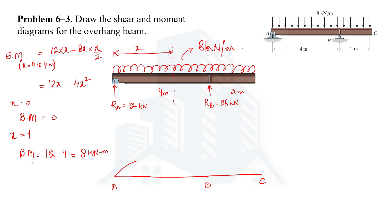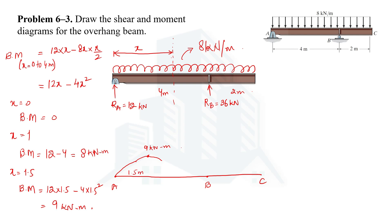Since the shear force was zero at x = 1.5 m, the bending moment is maximum at that point. Substituting x = 1.5 into M = 12x − 4x²: M = 12(1.5) − 4(1.5²) = 18 − 9 = 9 kN·m. So the maximum bending moment is 9 kN·m at 1.5 m from A. At x = 4 m (point B): M = 12(4) − 4(16) = 48 − 64 = −16 kN·m.